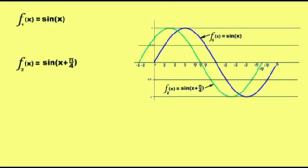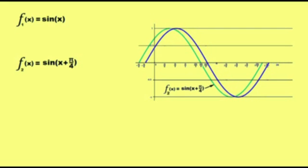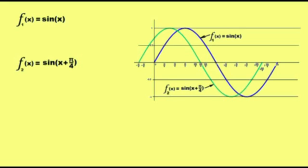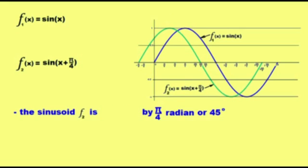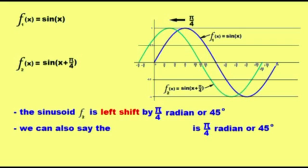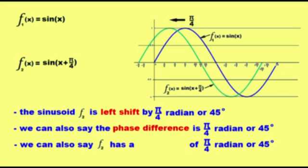Now let's put together the ordinary sinusoidal waveform and the phase shift sinusoidal waveform into one graph. You can see that sine function F2 is left-shifted by pi over 4 radian, or 45 degrees. We can also say that the phase difference between the two sinusoidal waveforms is pi over 4 radian, or 45 degrees. We can also say that function F2 has a phase shift of pi over 4 radian of 45 degrees.